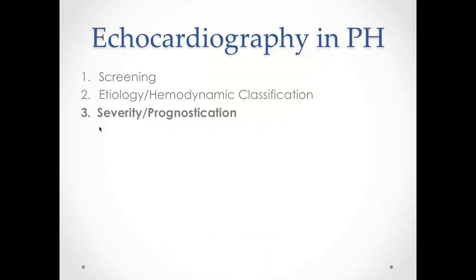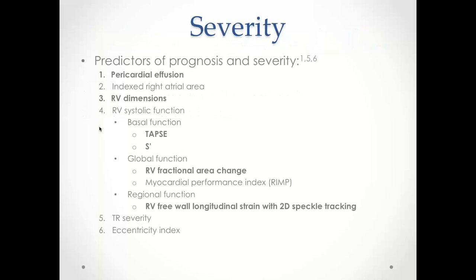The last section discusses severity and prognostication. The most important predictors of prognosis and severity by echo include pericardial effusion, indexed right atrial area, RV dimensions, and RV systolic function. RV systolic function can be assessed via basal/regional measures (TAPSE, S prime), global function measures (RV fractional area change, myocardial performance index), or regional measures such as free wall longitudinal strain by 2D speckle tracking. Other important prognostic markers include severity of TR and eccentricity index.